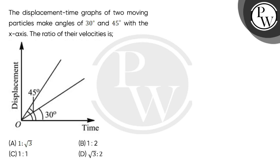Hello, let's read the question. The displacement time graphs of two moving particles make angles of 30 degree and 45 degree with the x-axis. The ratio of their velocities is.